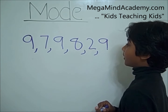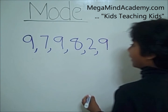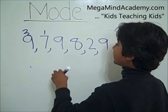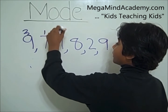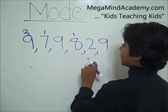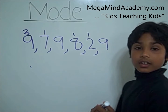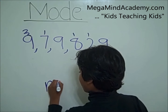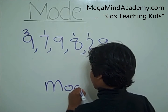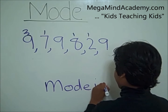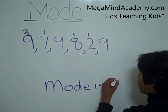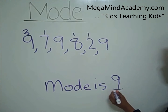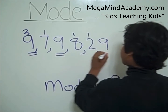Well, we have to find the number that occurred most often. 9 occurred 3 times, 7 occurred once, 8 occurred once, and 2 occurred once. So the mode is 9.